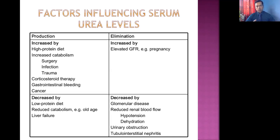Conditions where blood urea is decreased: decreased synthesis occurs with low protein diet, reduced catabolism such as in old age, and liver failure or liver disease since the liver is the organ that synthesizes urea. On the other hand, increased elimination of urea from the kidney also lowers the level — this can happen physiologically in pregnancy, where GFR is usually higher, so urea level may be low in the blood.